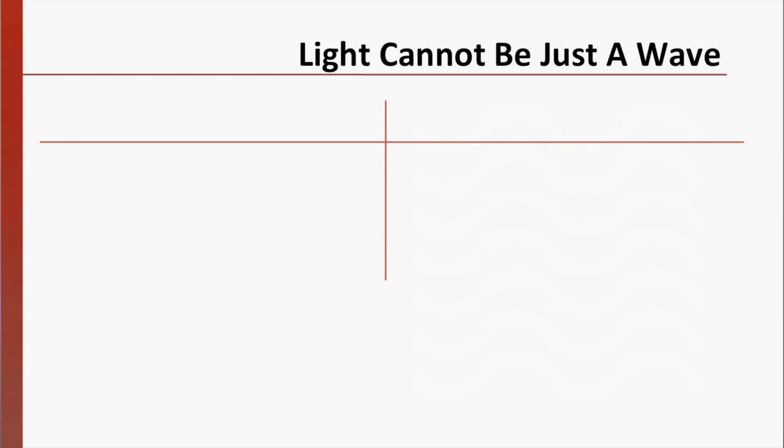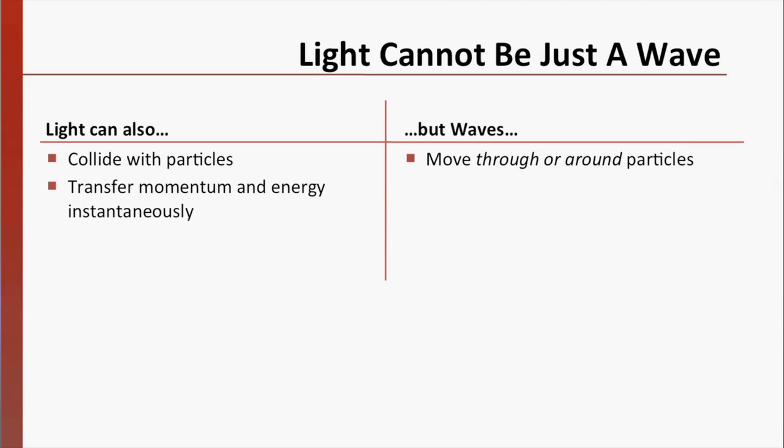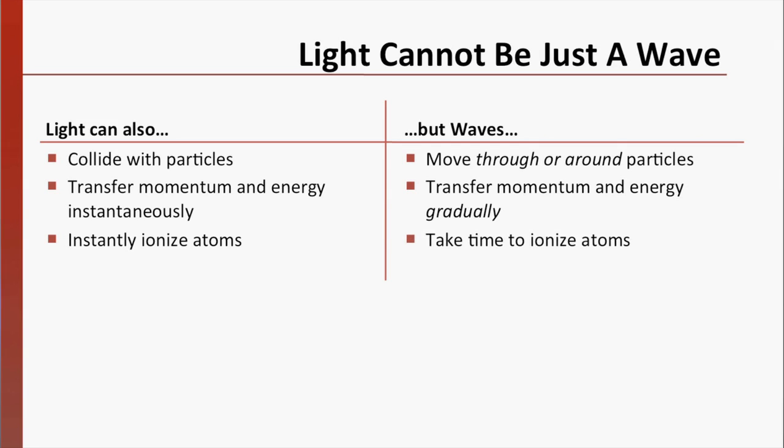In addition to the aspects that are wave-like, light has other properties. Light can also collide with particles of matter. Waves, on the other hand, move through or around particles. Light can transfer momentum and energy almost instantaneously through these collisions. Waves must transfer energy and momentum gradually. Finally, light can ionize atoms almost instantly, but electromagnetic waves would need more time to do this because of the gradual energy transfer. It is clear that light cannot be just a wave.